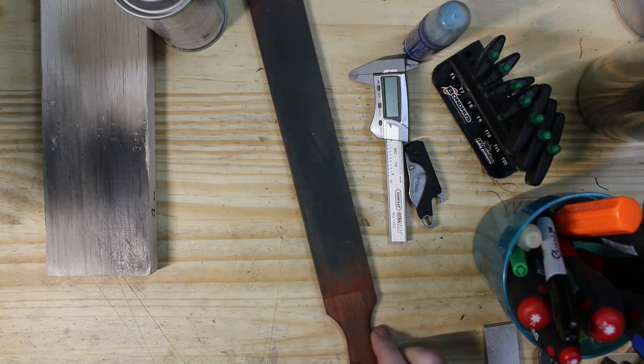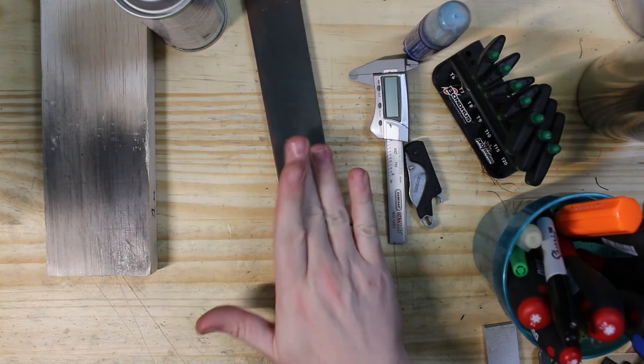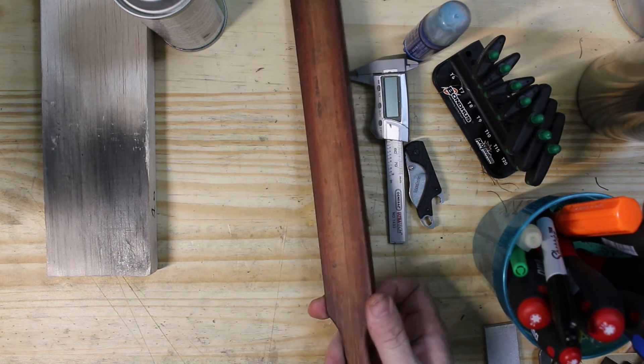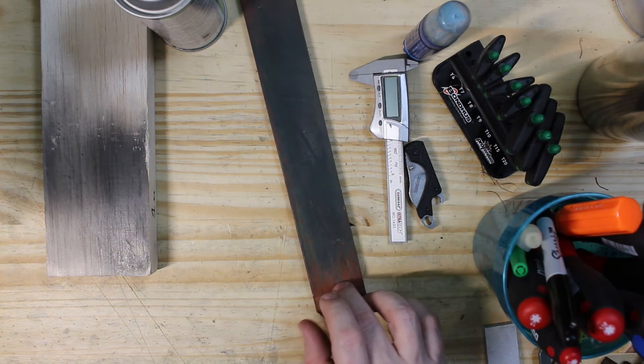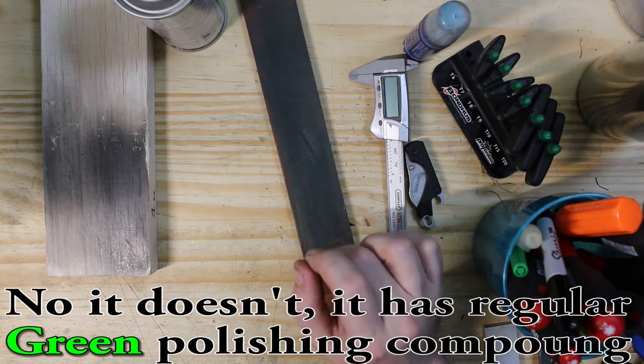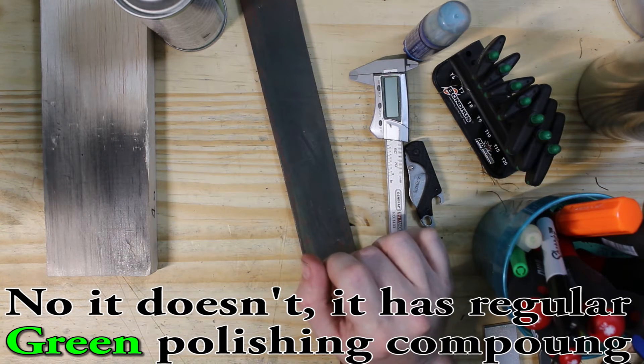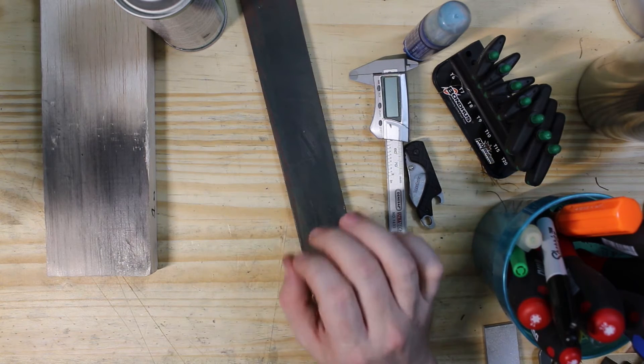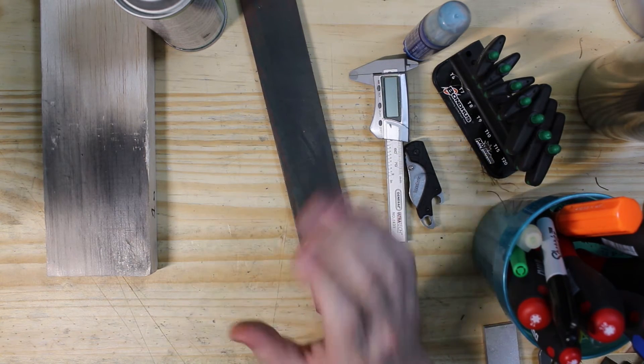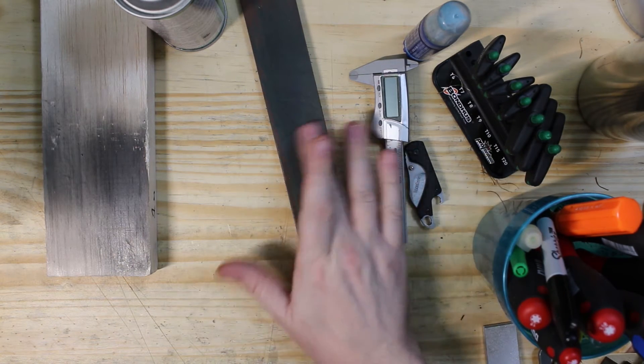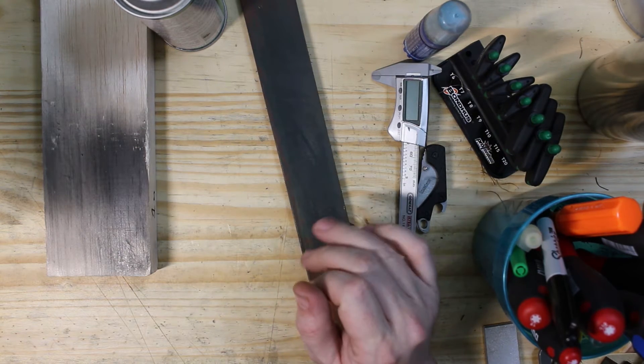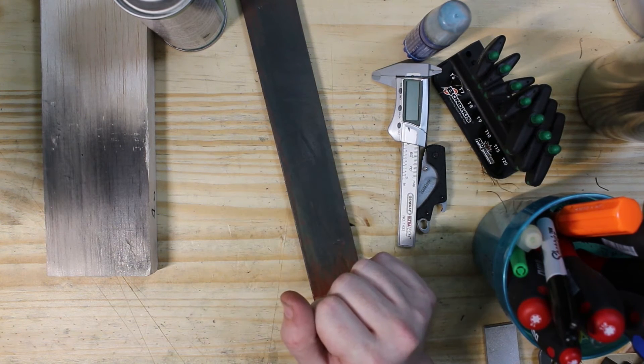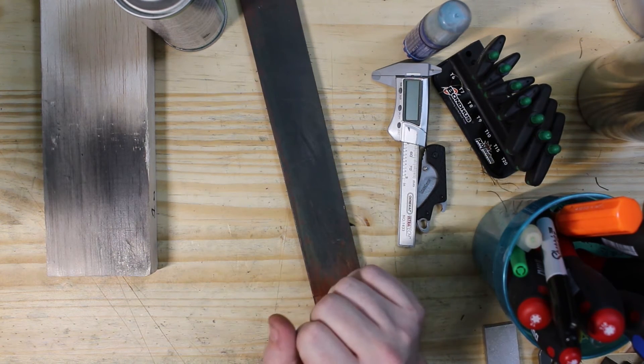Depending on the steel, we may use this strop. This is an Aussie Strops kangaroo leather strop with green diamond paste on it. For some steels, this is really as far as you need to go, unless you're looking for that super serious mirror polish. Aus8 and S30V, this is as far as you have to go for a mirror polish.